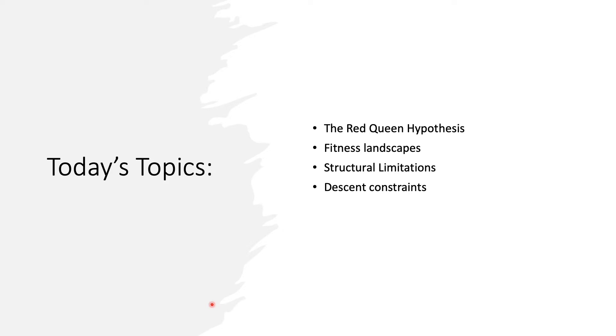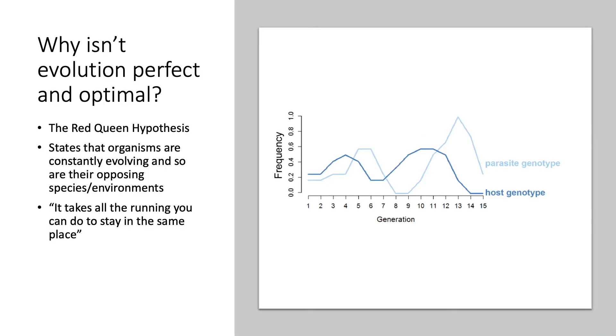Again, we're getting to the main question of why is evolutionary design imperfect. The first thing to address this is the Red Queen Hypothesis. Essentially what the Red Queen Hypothesis states is that organisms are constantly evolving and so are their opposing species and the environment that they're in.